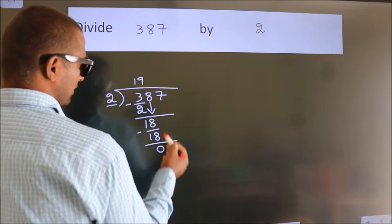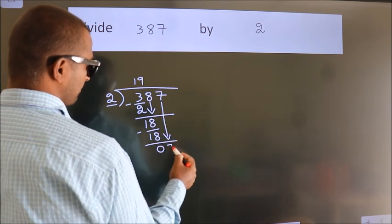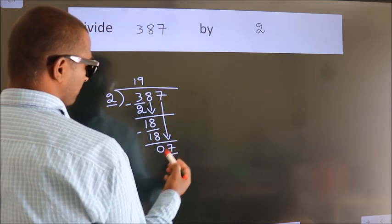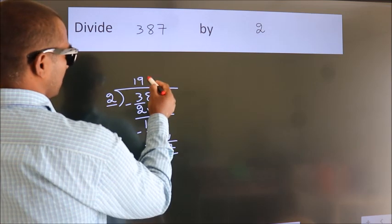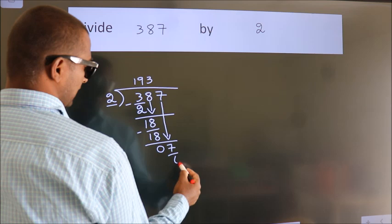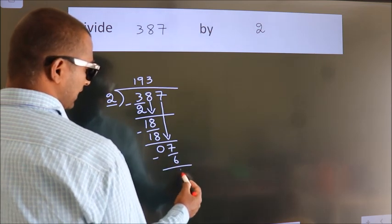After this, bring down the beside number. So, 7 down. So, 7. A number close to 7 in 2 table is 2 3s 6. Now, we subtract. We get 1.